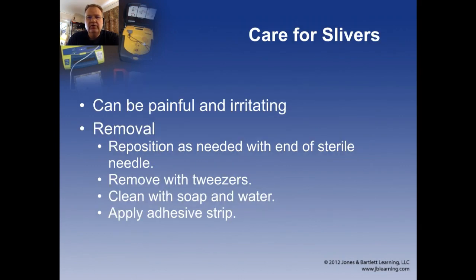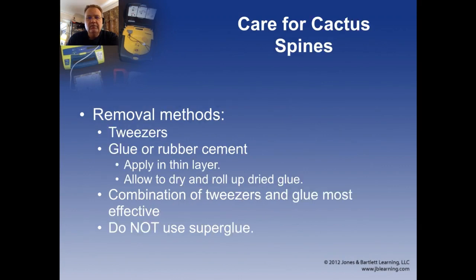Slivers and small splinters can be incredibly painful, cause problems with functioning, and can get infected, so take them out if they're a problem. Use a sterile needle to move the end of it, then tweezers — splinter forceps with very fine tips are particularly well designed for this. Clean the area with soap and water and put an adhesive strip over it. For cactus spines, which can embed in large numbers, use tweezers first, then apply regular glue or rubber cement — not super glue — in a thin layer, let it dry, and roll it off to pull out most of the spines. Go back over with tweezers for what's left.